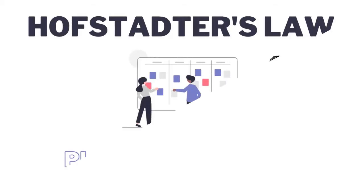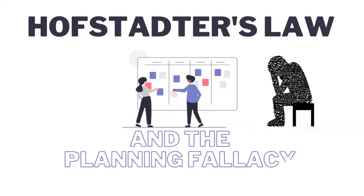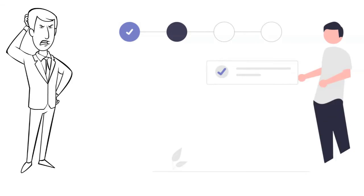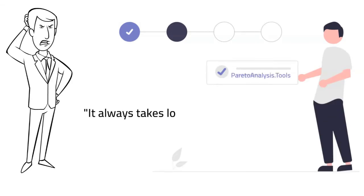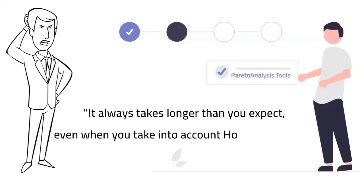Have you ever been frustrated with a task that took longer than expected? Hofstadter's law is actually the law that explains it. It states that it always takes longer than you expect, even when you take into account Hofstadter's law.